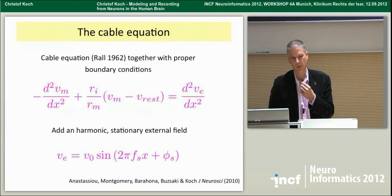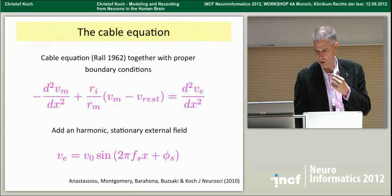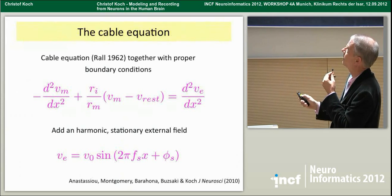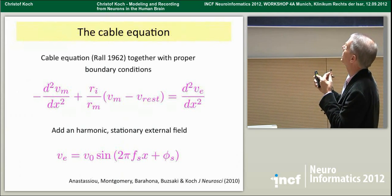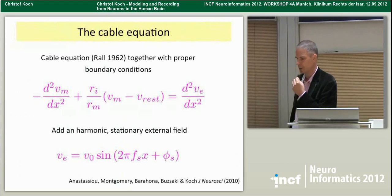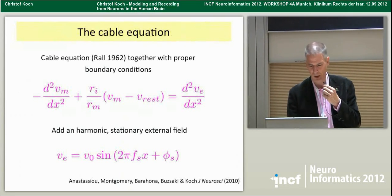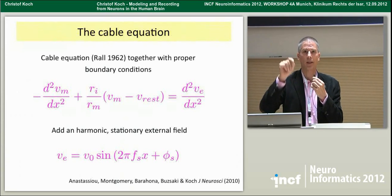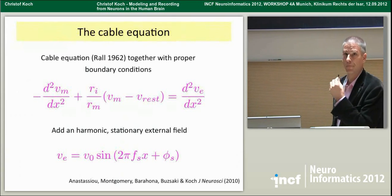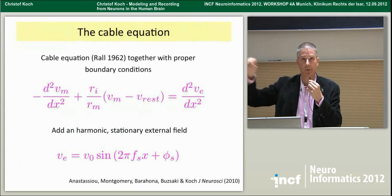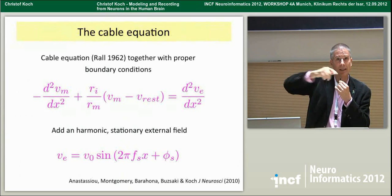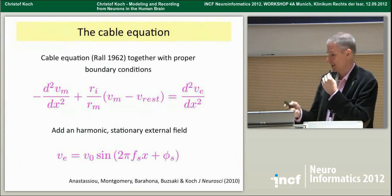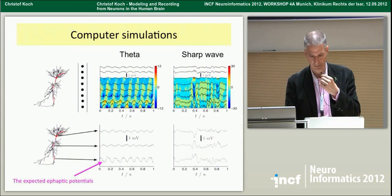The last topic is the inverse problem — how does the field influence neurons? Looking at the basic linear cable equation, you see a term for the second spatial derivative of the extracellular potential. In 99.99% of all modeling, this is assumed to be zero. You either assume the extracellular potential is zero or constant. But there's no reason to neglect it in the brain, where we know fields exist. Simulating theta waves or sharp waves in hippocampus, you expect very small effects — perhaps half a millivolt — which you might routinely neglect.